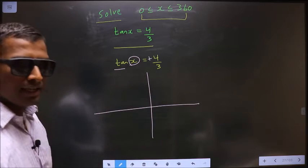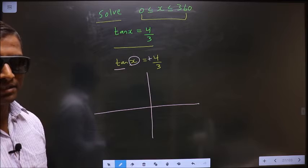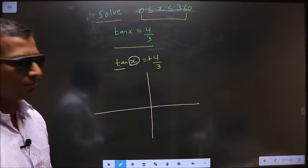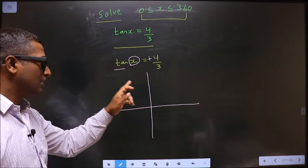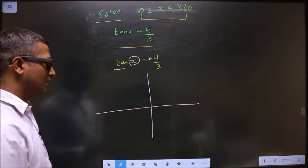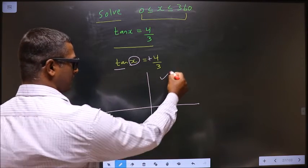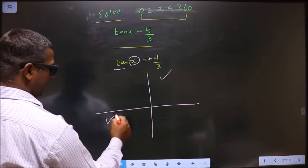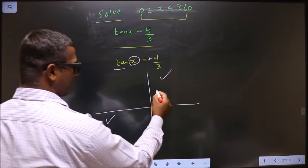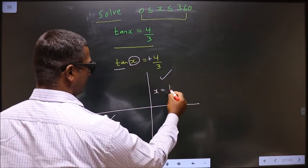Check in what quadrants tan is positive. Using 'All Silver Tea Cups', tan is positive in the first and third quadrants. To get an angle in the first quadrant, we do tan inverse 4/3.